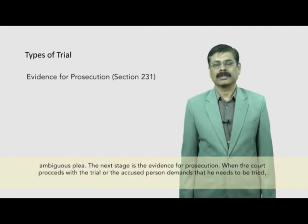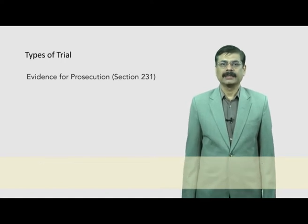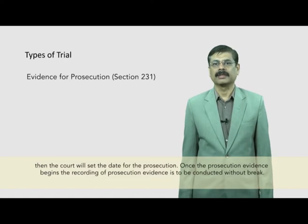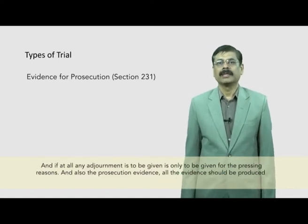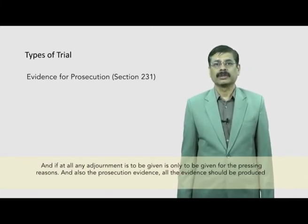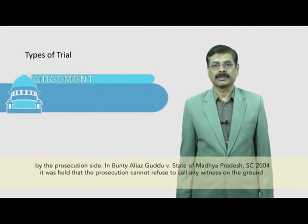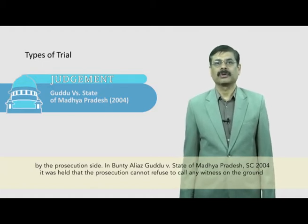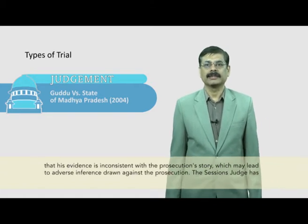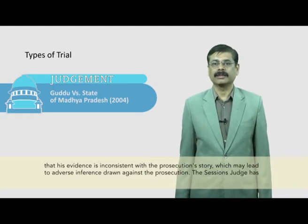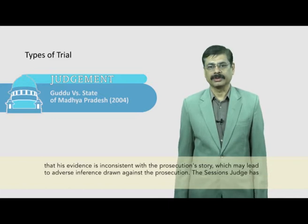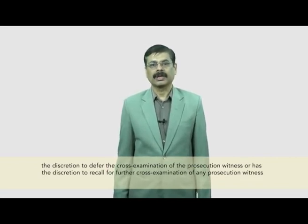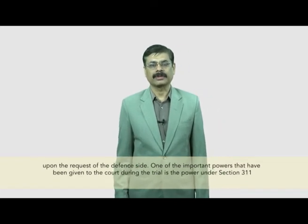When the court proceeds with the trial or the accused person demands to be tried, the court will set the date for the prosecution evidence. Once prosecution evidence begins, it is to be conducted without break, and any adjournment is only to be given for pressing reasons. All evidence should be produced by the prosecution side. In Bunty alias Guddu versus State of Madhya Pradesh, Supreme Court 2004, it was held that the prosecution cannot refuse to call any witness on the ground that his evidence is inconsistent with the prosecution story, which may lead to adverse inference drawn against the prosecution. The session judge also has discretion to defer or recall prosecution witnesses for further cross-examination upon request of the defense.